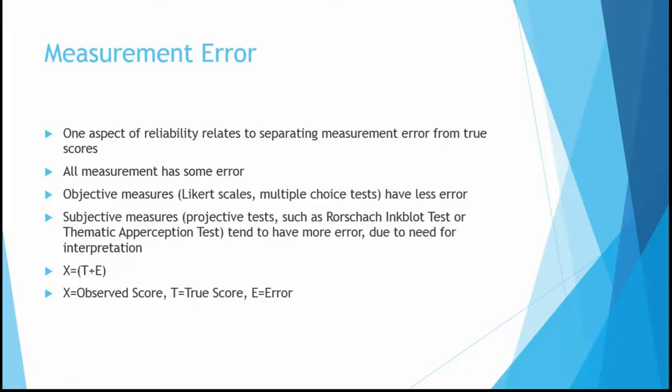The simple formula to calculate error is: X (the observed score — the score we get when we actually give the test) equals the true score plus the error. The problem is we can never really calculate it that way because we never know what the true score is — we only have the observed score. So it's a way to think about it mathematically, but not a lot of practical help.